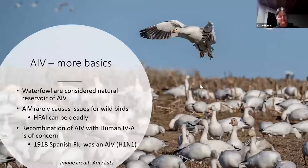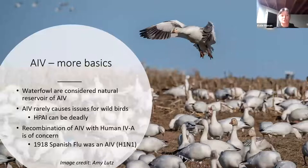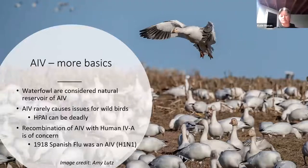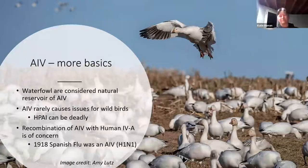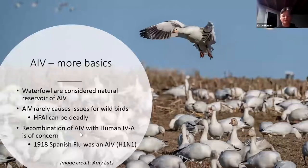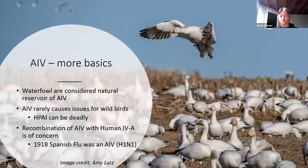Waterfowl are typically considered the natural reservoir of avian influenza viruses in general — all the influenza A subtypes tend to circulate in waterfowl. They don't really tend to cause disease in wild birds unless the birds are immunosuppressed or have something else going on. The high path AI strains can be quite deadly, especially for domestic birds, and it's now becoming more deadly in wild birds. The recombination of avian influenza strains with human influenza A is a really big concern — that's where the risk of more impact on humans lies.